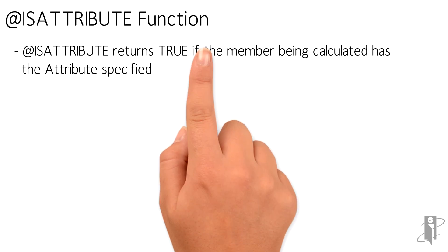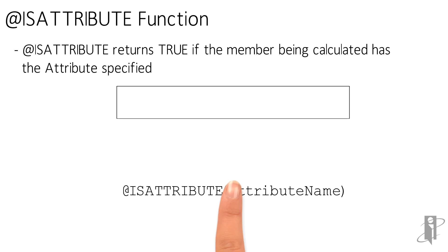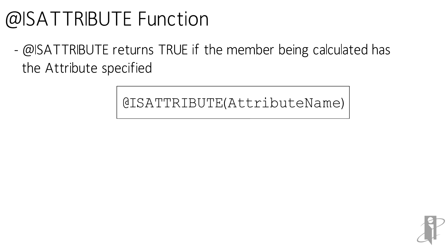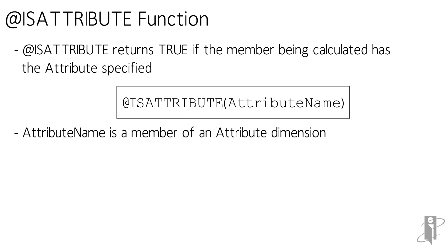Like the @Attribute function, @IsAttribute takes a single argument: what is the attribute you want to check and see if this member has it. The attribute name is just any member of an attribute dimension.